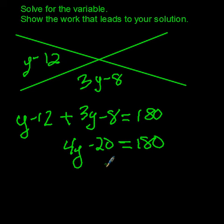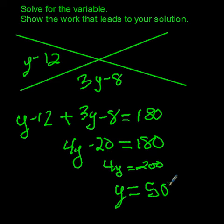Now I add 20 to both sides, so you get 4y equals 200. And then we can do the arithmetic here, dividing both sides by 4, we end up with y is 50.